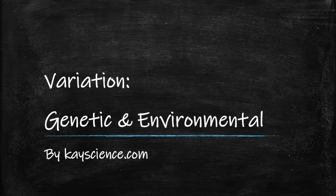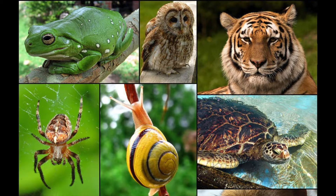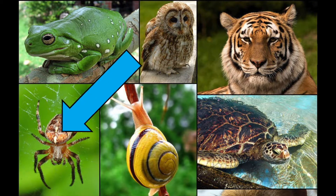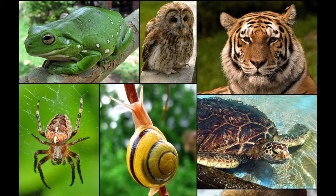Variation, by kscience.com. Variation is a difference in characteristics. So all of these different species show a difference in characteristics. Even though the tiger and the spider both have legs, their legs are different. Even though the tiger and the spider have hair on their bodies, the hair is different. They all have eyes, but all their eyes are different. This is variation — differences in their characteristics.